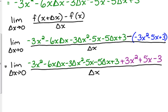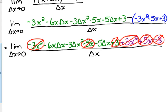So, now, look at what happens. We have a negative 3x squared plus 3x squared. Those cancel. We've got a minus 5x and a plus 5x. Those cancel. We've got a plus 3 and we've got a minus 3. Those cancel.